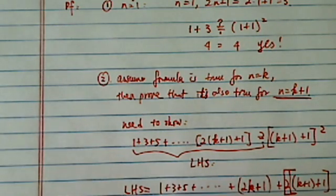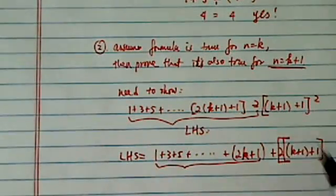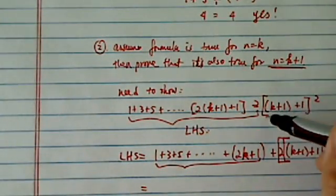Okay, so this is up to n equals k, and we added one more term. Then what we're going to do is show this thing is equal to this side.